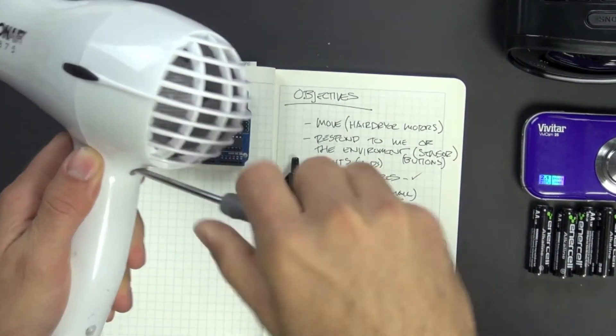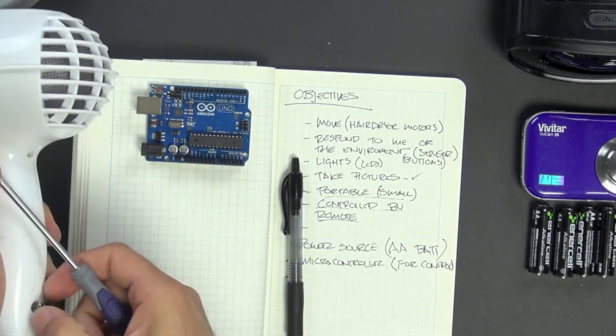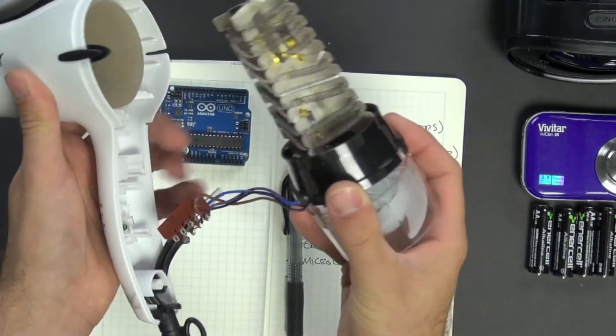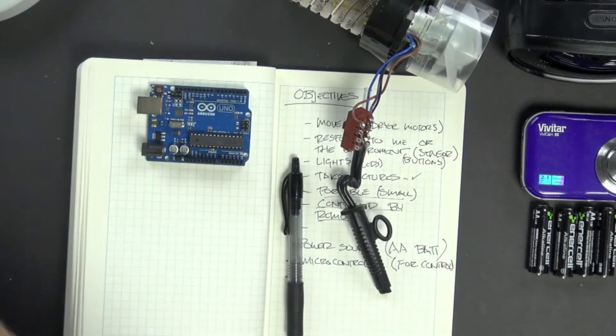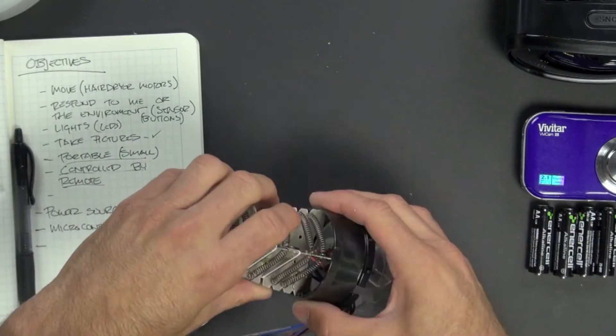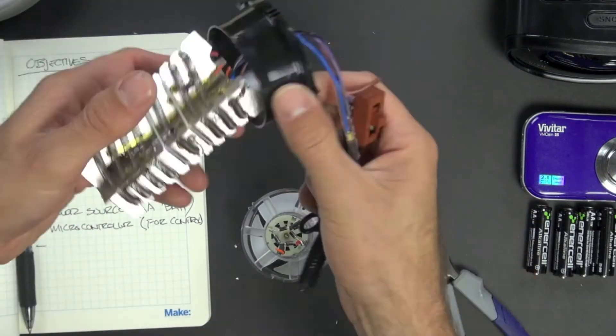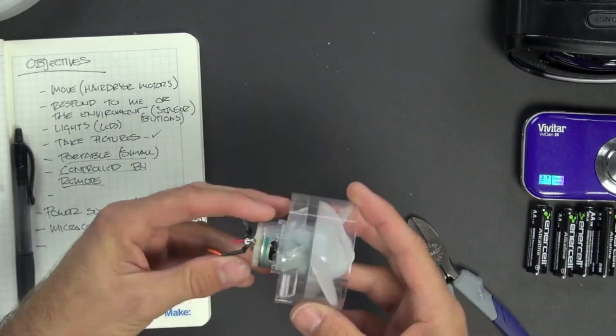So let's get started taking our hair dryer motor apart, taking it out of the hair dryer, I should say. And since that's going to be what we're using to move our craft around, we want to start to experiment with it and see how much power it's going to require and how much torque it's going to have and things like that.